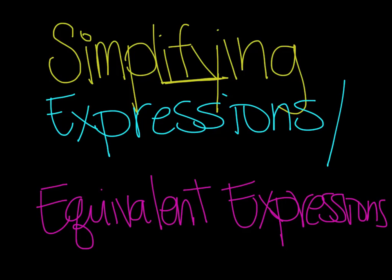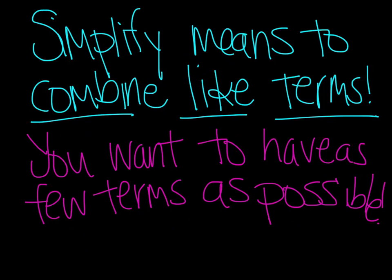Let's take a look at simplifying expressions or finding equivalent expressions. Yesterday you learned how to combine like terms. Remember that like terms are terms that have the same variable taken to the same power. So x is different than x squared because the variables are taken to a different power. To simplify really just means to combine like terms — they're the same thing. You basically just want to have as few terms as possible.